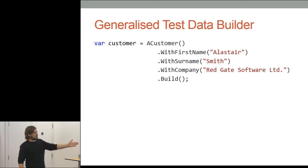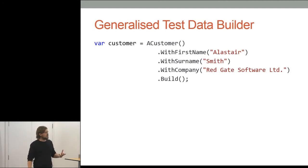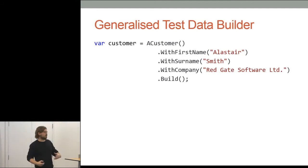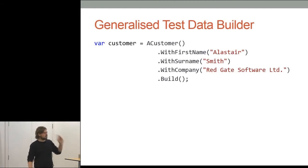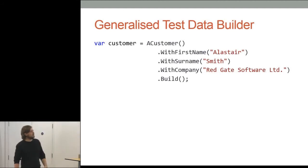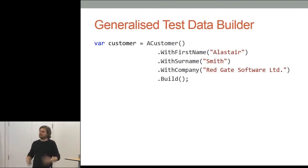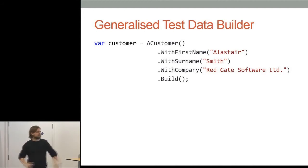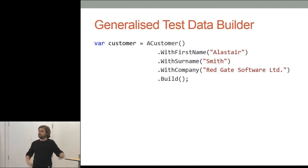What I really like about this is the fluent syntax, because it makes it really obvious what you're creating. You're creating a customer with a first name, surname, and a shipping company — rather than going through the constructor and saying 'new customer, Alastair Smith, Reigate,' where it doesn't necessarily match up what the data is with what the fields are.